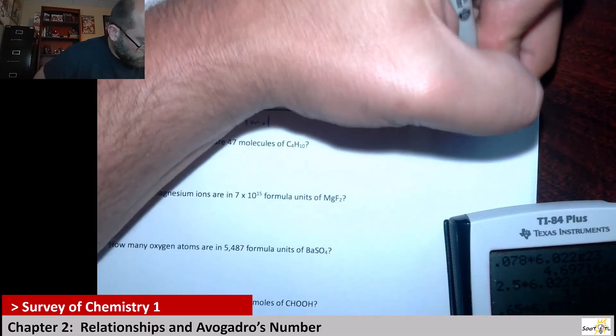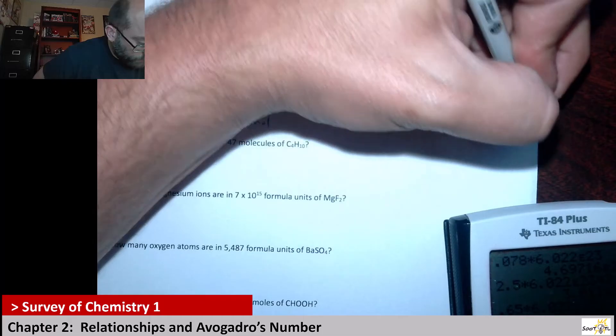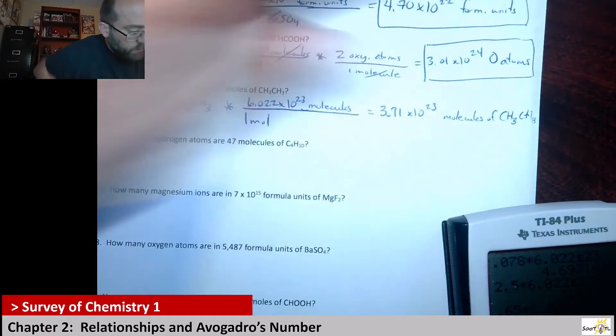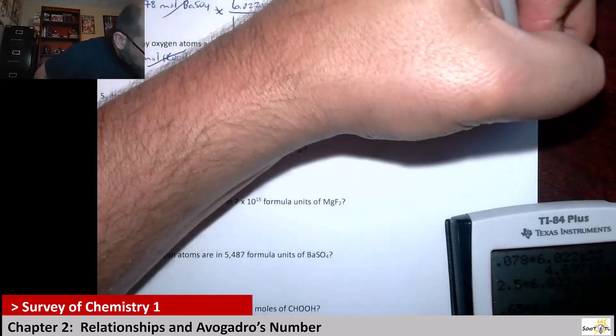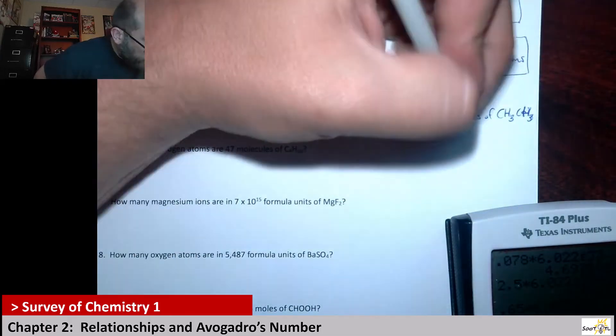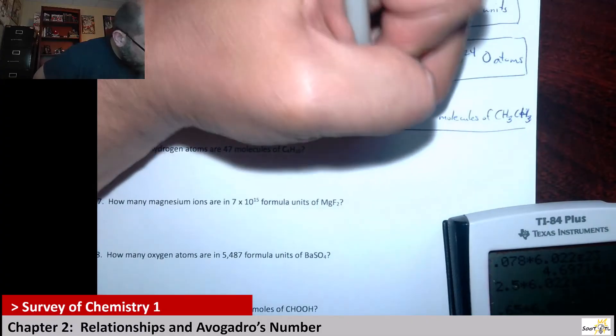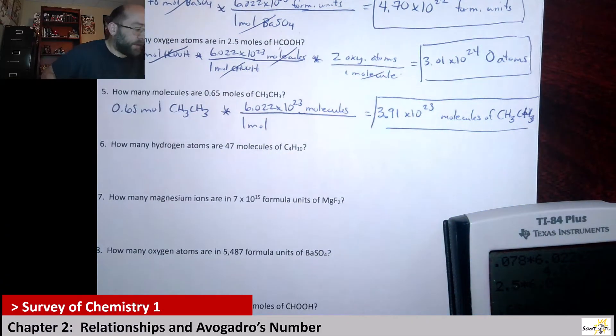3.91 times 10 to the 23 molecules of CH3CH3. Sorry, I'm on the edge of my paper so it got misaligned. And there's our answer.